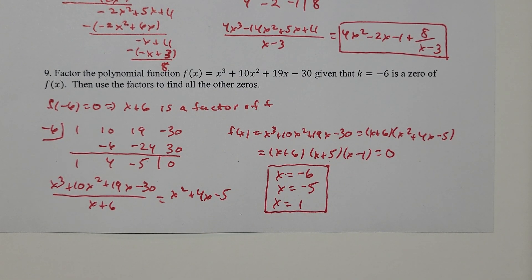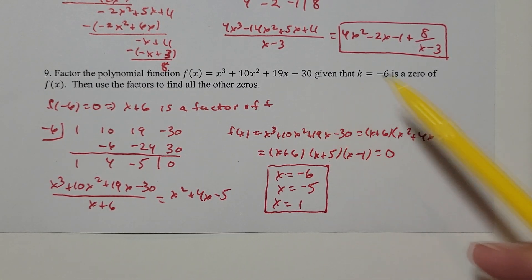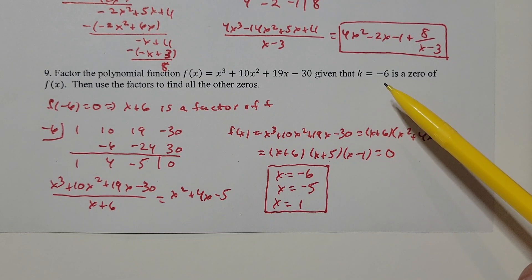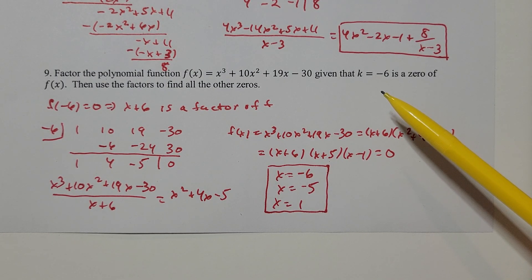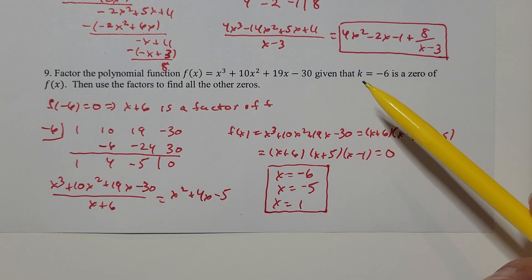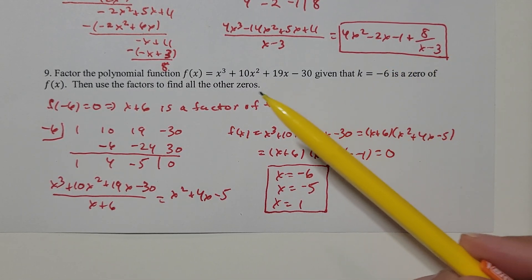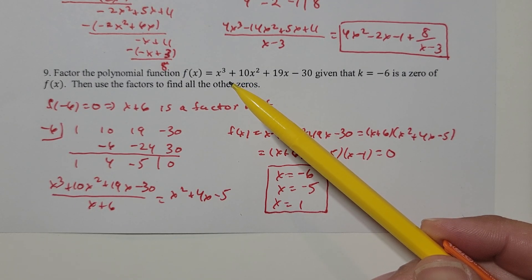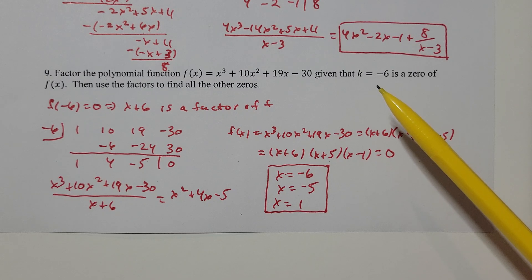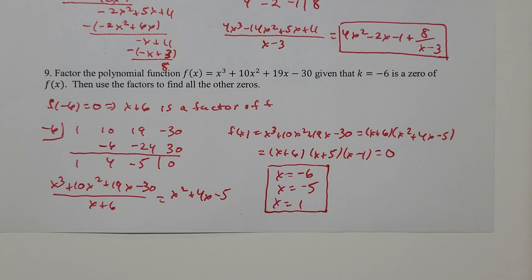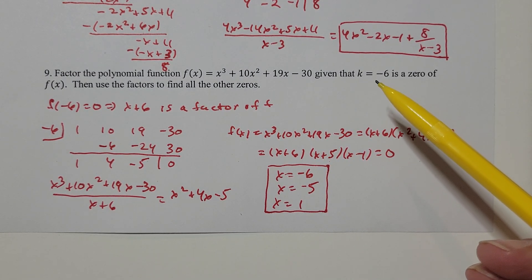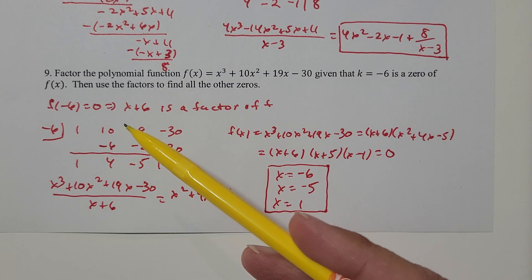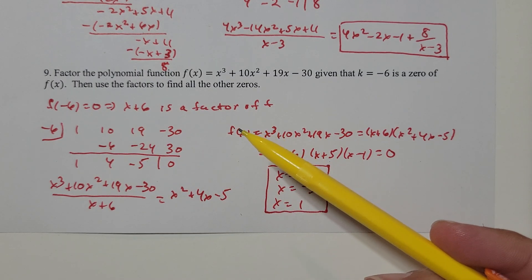Sometimes in math books, when they want us to find the zeros of a polynomial, they're not going to give us one of the answers. I have a degree three polynomial, so I can know that there's going to be three answers. One of the answers is negative six — I just have to find the other two. Knowing that negative six is a zero means that x minus negative six, or x plus six, is a factor of f.